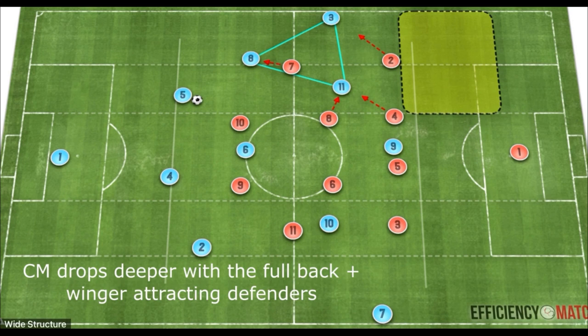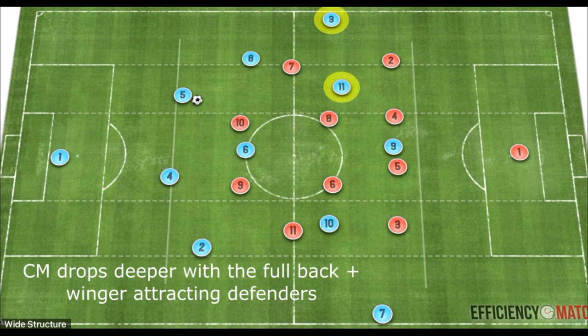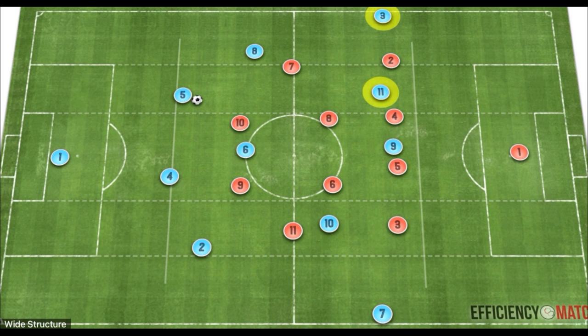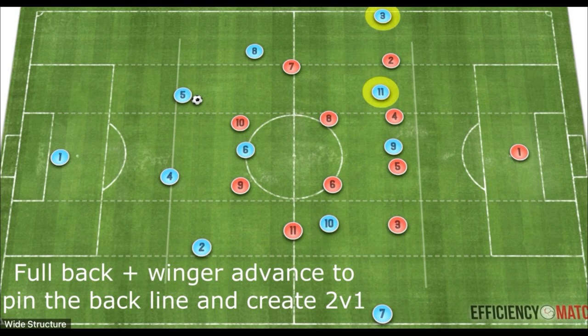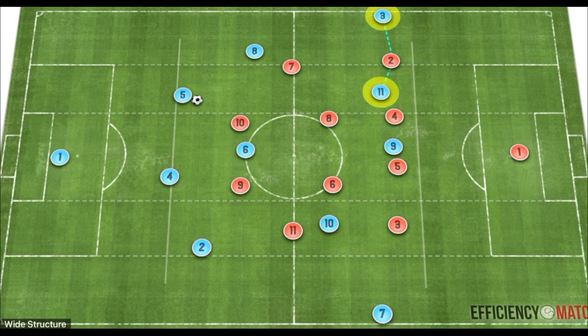By using these two players in a deeper area, we can affect the defensive shape and create space in behind. When these players move higher, they signal to the team that we're trying to exploit a different type of superiority — looking to create a two versus one against the opposing fullback using the half space and wide area. This also typically pins defenders in a more solidified way and creates space earlier in the team's build-up.